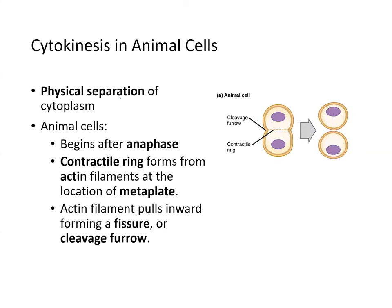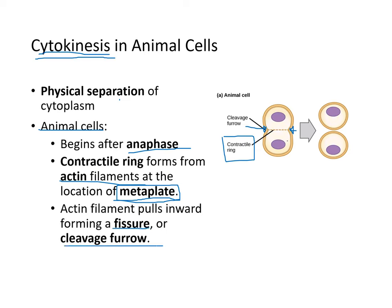Physical separation of the cytoplasm happens in cytokinesis. In animal cells, it begins after anaphase, and the contractile ring is made up of actin filaments. This ring is located at the same location as the metaphase plate. Actin filaments pull the plasma membrane inward, which pinches off the daughter cells, creating the cleavage furrow. This continues until the plasma membranes merge and two cells are separated.